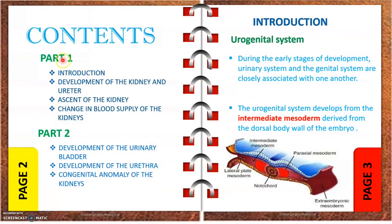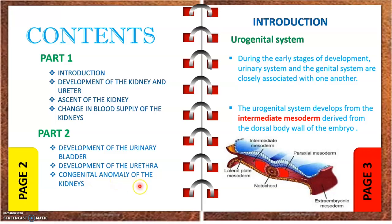These are our contents. In part one, covered in this video, we will look at the introduction of the urinary system, the development of the kidney and ureter, the ascent of the kidney, and some changes in the blood supply of the kidney. Part two, in a separate video, will include the development of the urinary bladder, the urethra, and some anomalies of the kidneys.